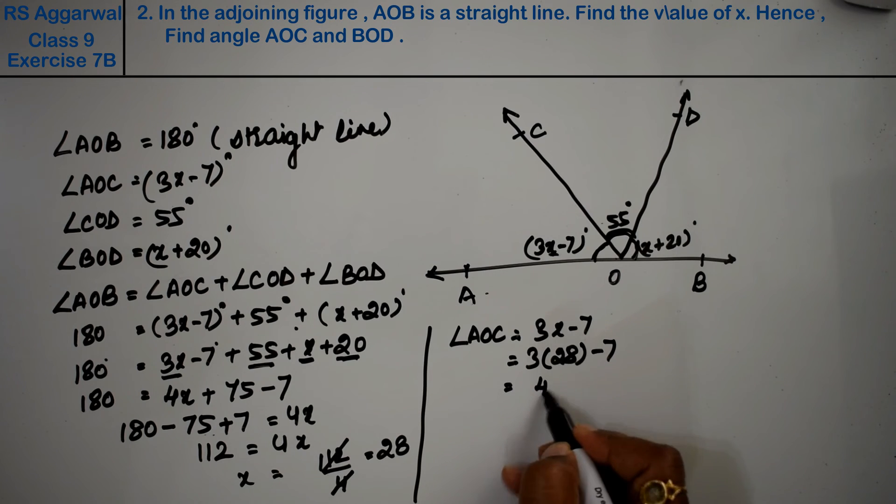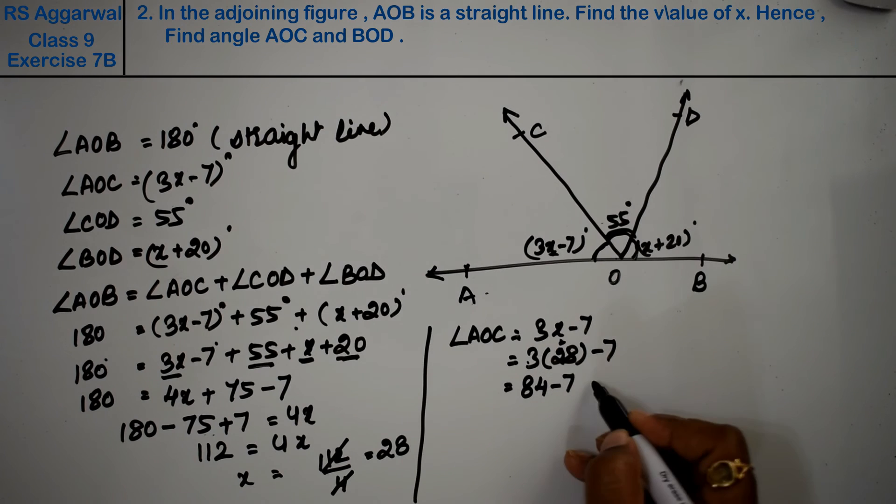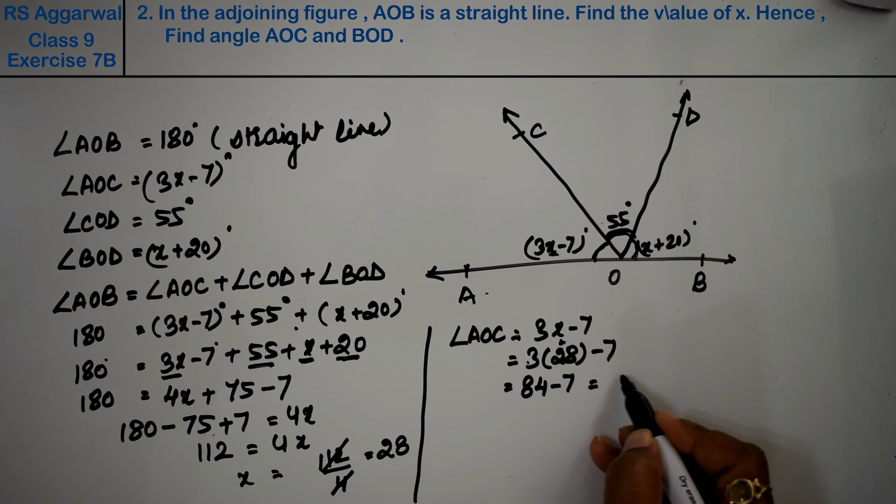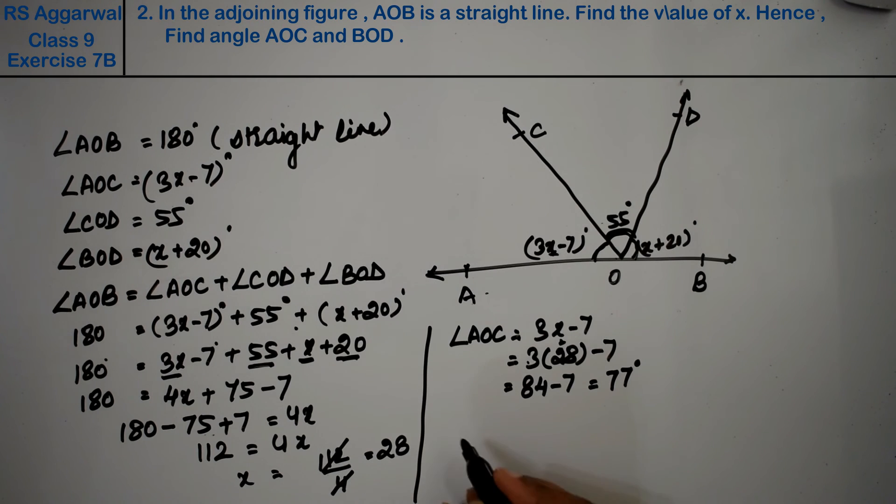3 times 28: 3 eights are 24, carry 2, 3 twos are 6 plus 2 is 8. So 84 minus 7 equals 77 degrees.